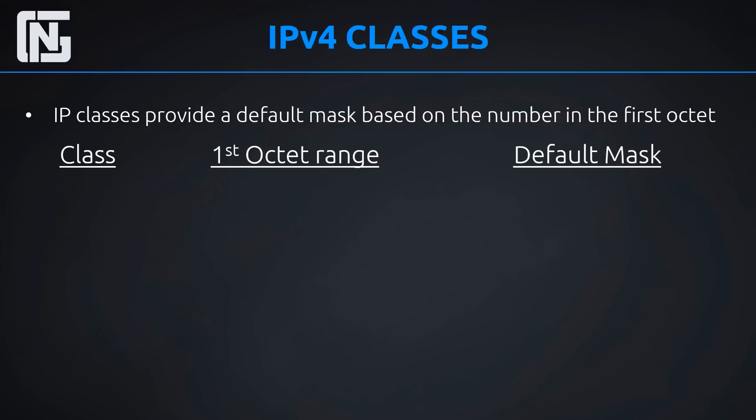So we have a class, a first octet range of numbers, and a default mask — those are the things associated with IPv4 classes. Our first class is Class A, and the range is 1 to 126, which gives us a default mask of 255.0.0.0.